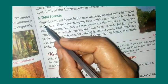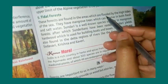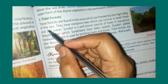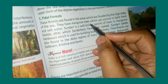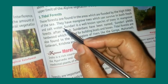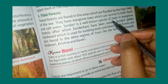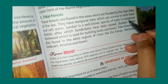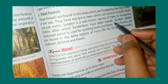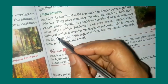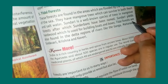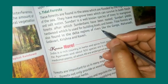These forests are found in areas which are flooded by high tides. They are mangrove trees which can survive surrounded by both fresh and salt water. The Sundari tree is a well-known species, after which the Sundarbans have been named. Tidal forests are also found in the delta regions of rivers.